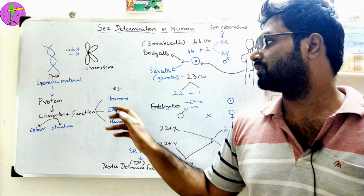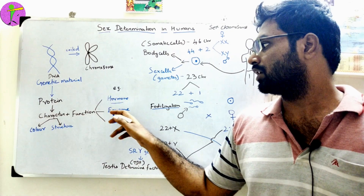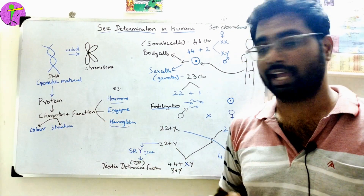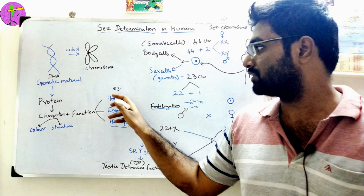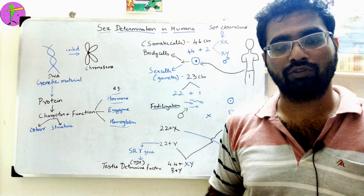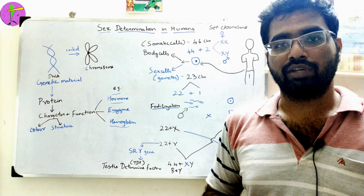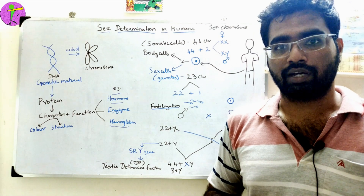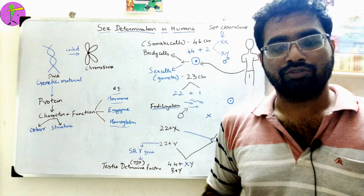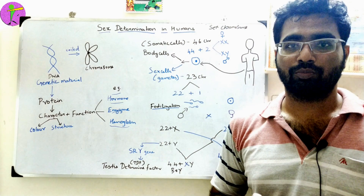What functions? Hormone functions, enzyme functions, hemoglobin — these are some examples. We know hormones; they are chemical messengers essential for the body.